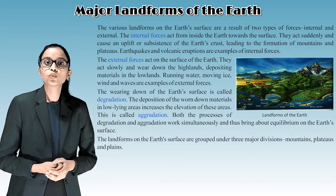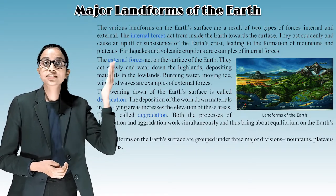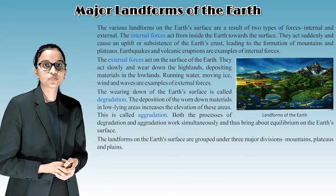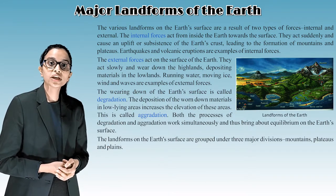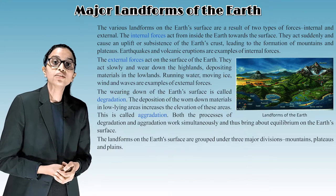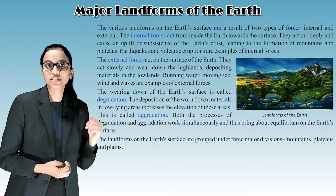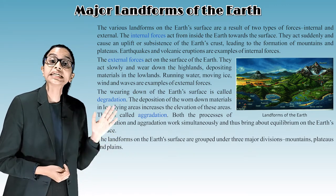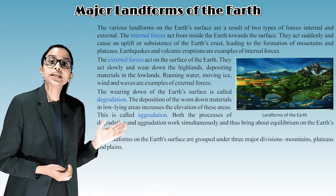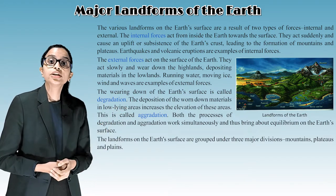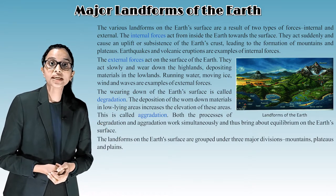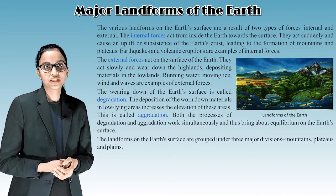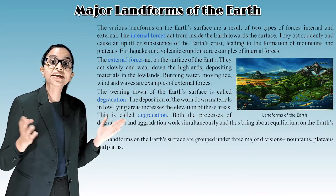The external forces act on the surface of the earth. They act slowly and wear down the highlands, depositing materials in the lowlands. Running water, moving ice, wind and waves are examples of external forces. The wearing down of the earth's surface is called degradation. The deposition of the worn-down materials in low-lying areas, which increases their elevation, is called aggradation.